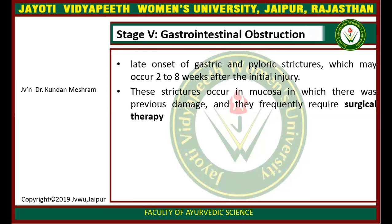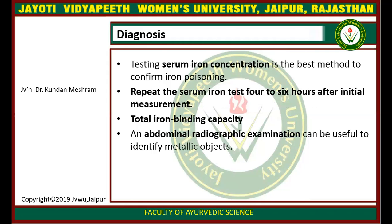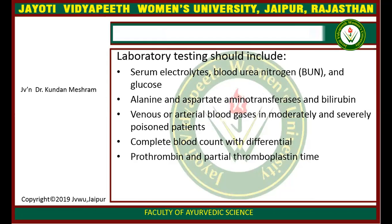These strictures appear in areas of mucosa with previous damage and frequently require surgical therapy. Regarding diagnosis of iron poisoning, testing serum iron concentration is the best method to confirm iron poisoning. Repeat the serum iron test 4 to 6 hours after the initial measurement. Total iron binding capacity should also be measured. Abdominal radiographic examination can be useful to identify metallic objects. Laboratory testing should include serum electrolytes, blood urea nitrogen, and glucose. Alanine and aspartate aminotransferase and bilirubin levels should also be measured.